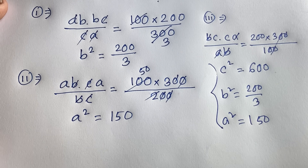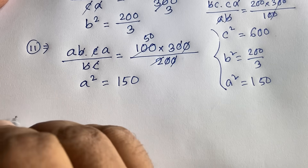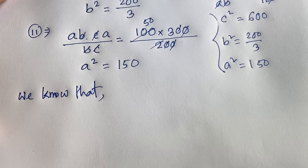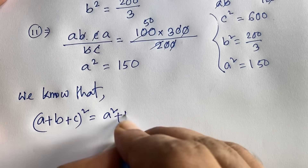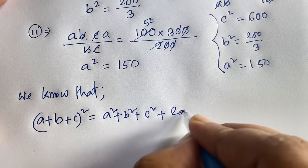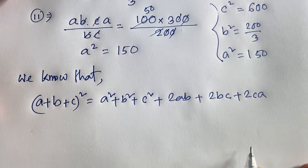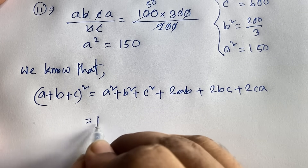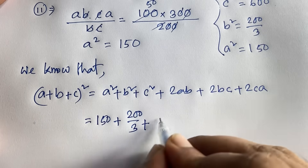So we have found three values: A squared is equal to 150, B squared is equal to 200 divided by 3, and C squared is equal to 600. Our target is to find the value of A plus B plus C. We know the algebraic identity: A plus B plus C whole square equals A squared plus B squared plus C squared plus 2AB plus 2BC plus 2CA. Now putting in the values: A squared is 150, B squared is 200 over 3, and C squared is 600.